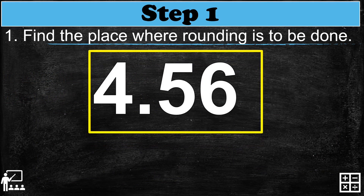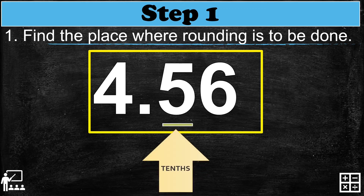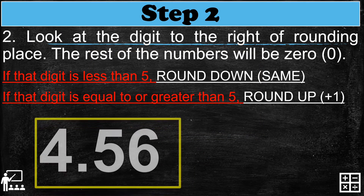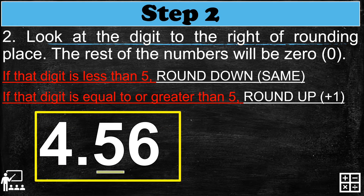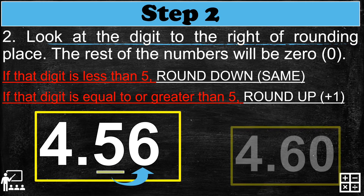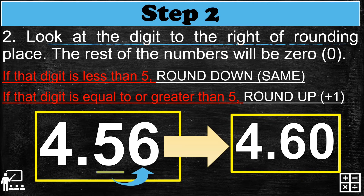Another example: 4.56, or four and fifty-six hundredths. Find the place where rounding is to be done — the tenths place digit is five. Look at the digit to the right of the rounding place: it is six. Six is greater than five, so we round up — we add one to five, giving six. So 4.56 becomes 4.6, and the rest will be zero.